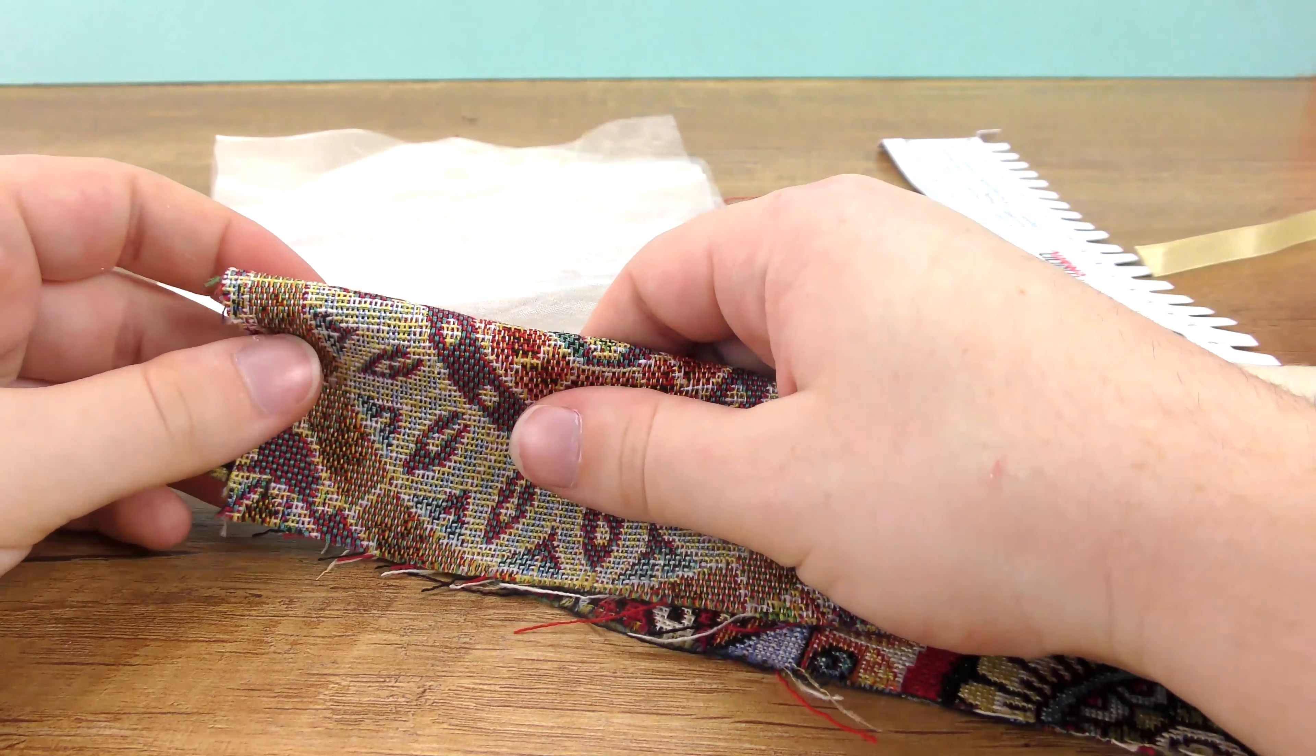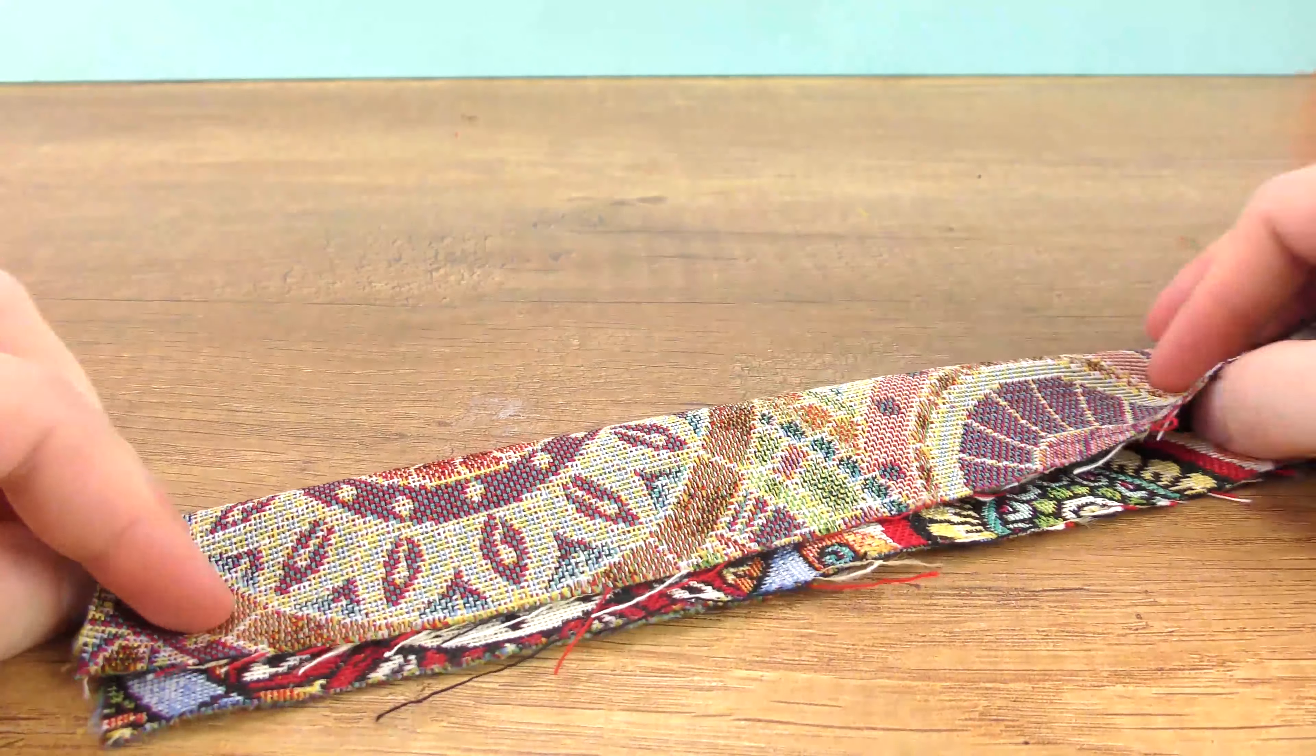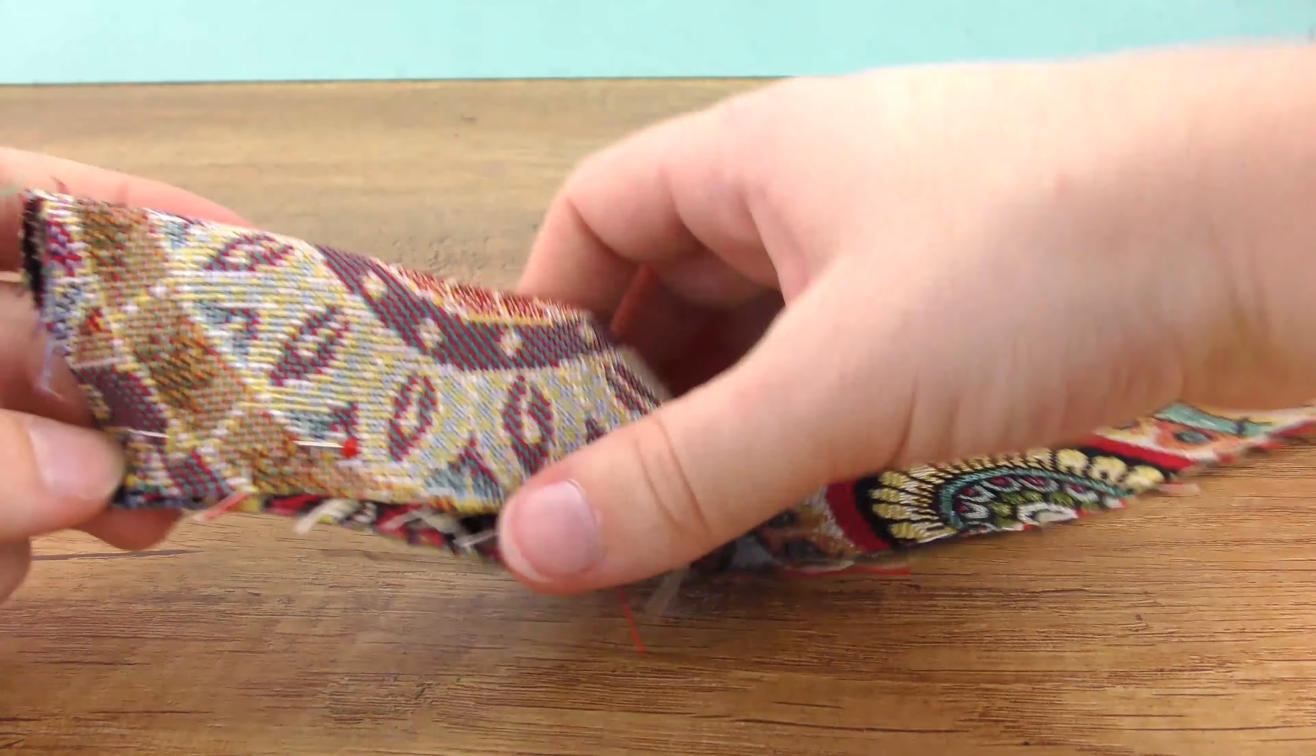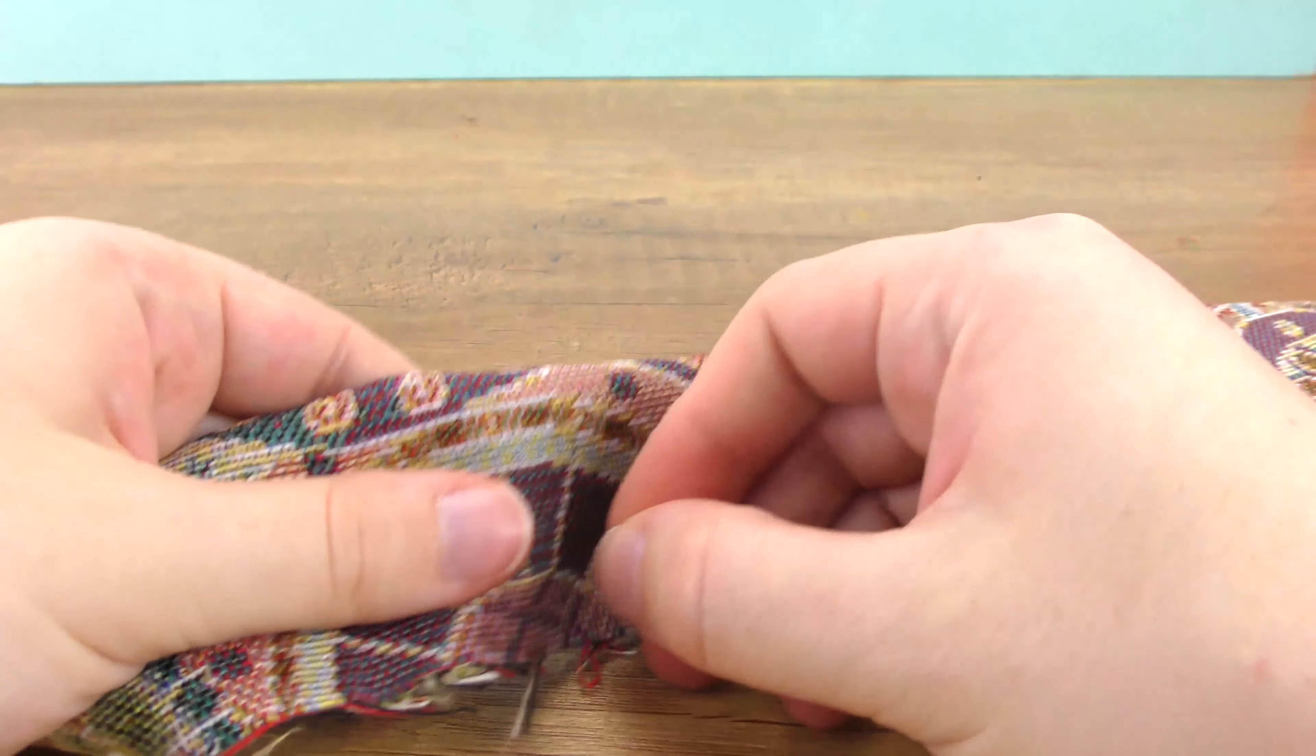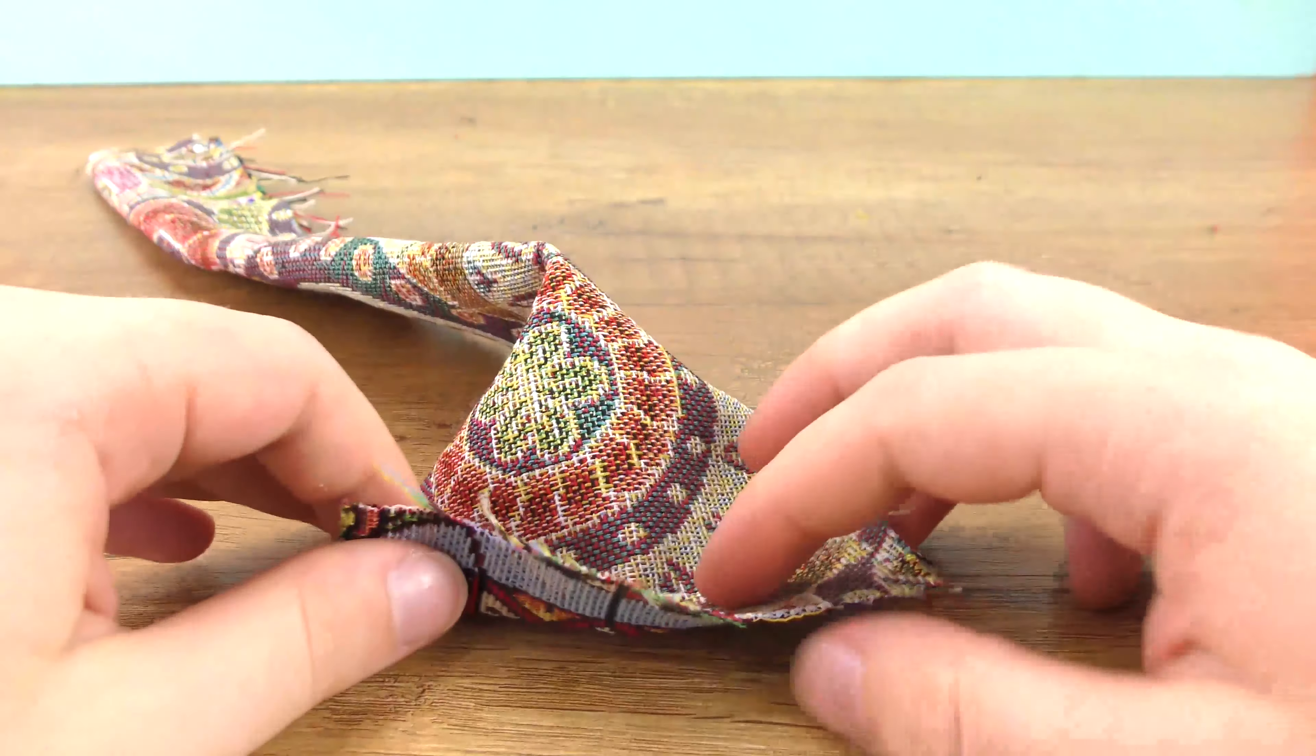Let's fold it in half like this. I forgot to say: feel free to use pins to make things easier for you, and then do a straight stitch along the longer side. The two ends should remain open.